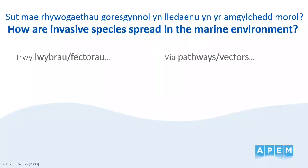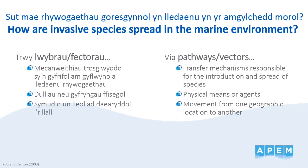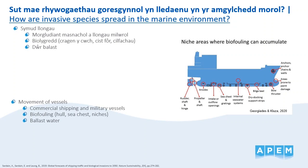So how are INNS spread in the marine environment? They spread by what are termed pathways or vectors. These are physical, human-mediated means by which species are transferred from one geographic location to another. Some examples of pathways in the marine environment include the movement of vessels, like commercial ships or military vessels. These vessels can travel vast distances between ports, potentially transferring INNS. They can be carried as biofouling on ship hulls, in sea chests or other niche areas. This diagram shows some of the areas where INNS can stow away.